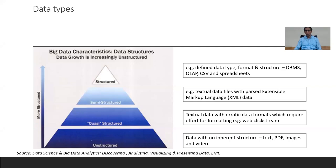Unstructured data includes things like images or videos which have no inherent data structure. In between, there are semi-structured data — partly formatted data, XML-type data — and also quasi-structured data, which is clickstream data on the web with erratic data form. Data falls in one of these four categories, and it's possible to shift data from one category to another using ETL — Extract, Transform, and Load — tools that make data ready to be analyzed.